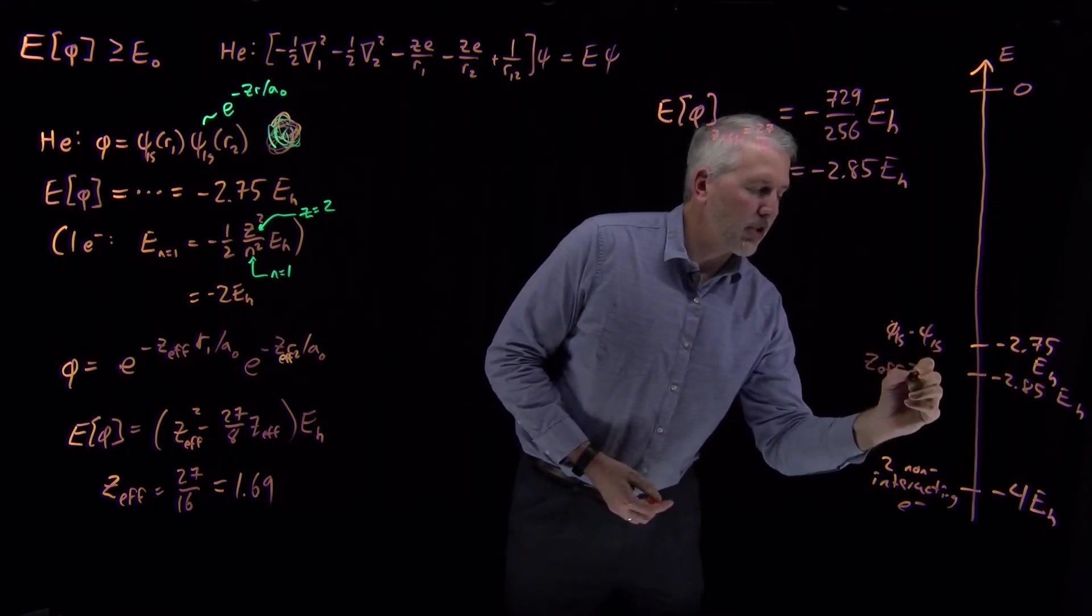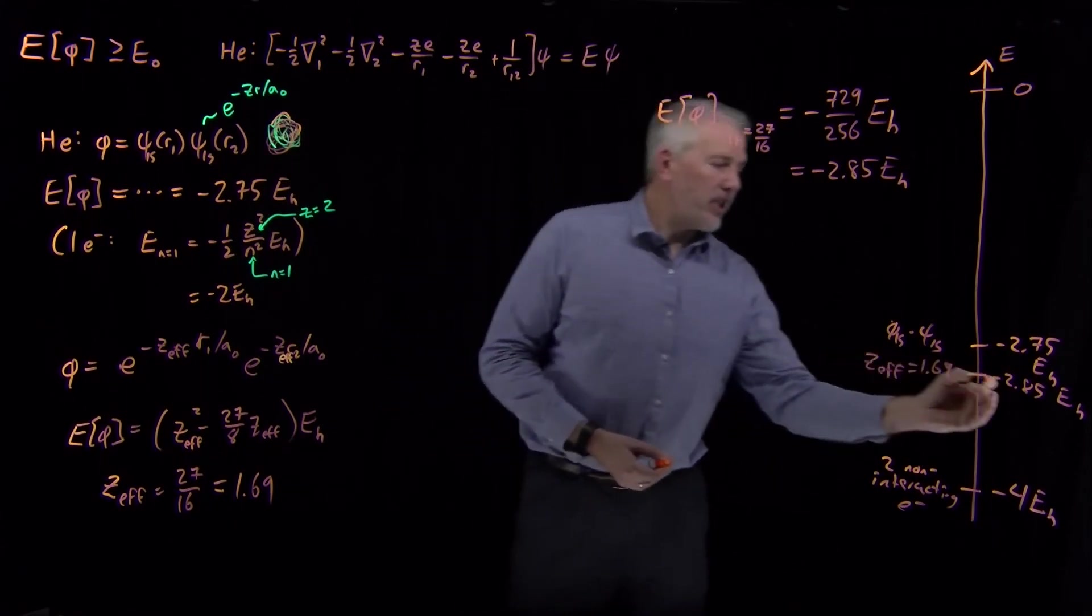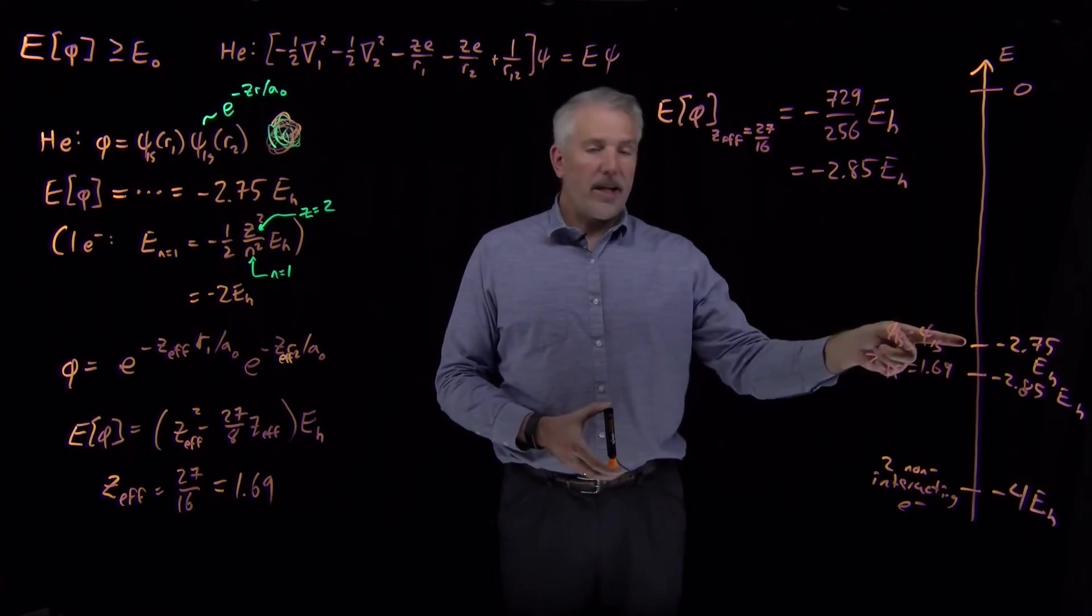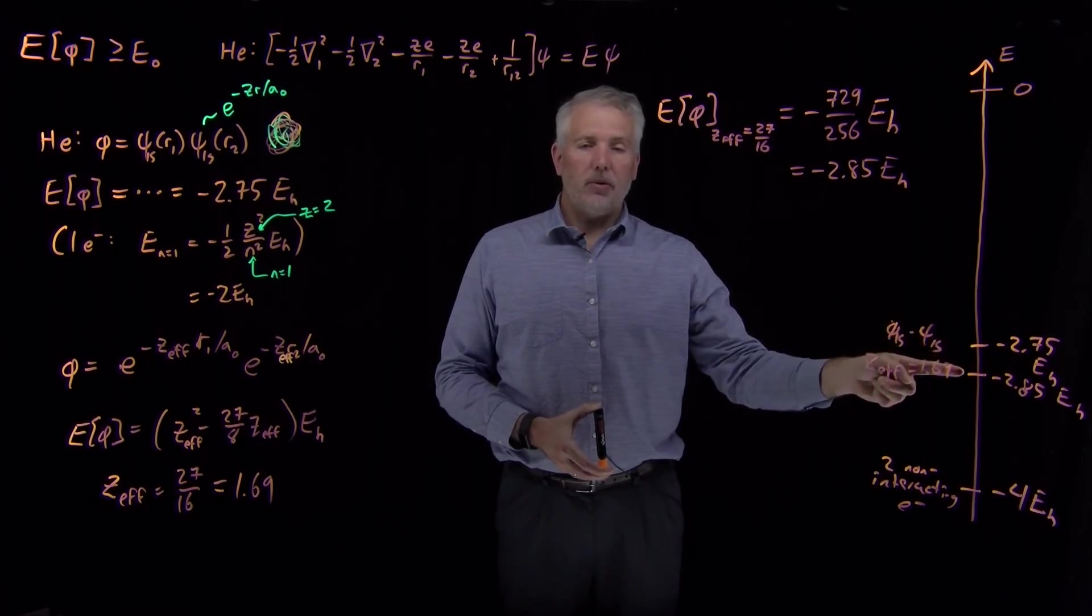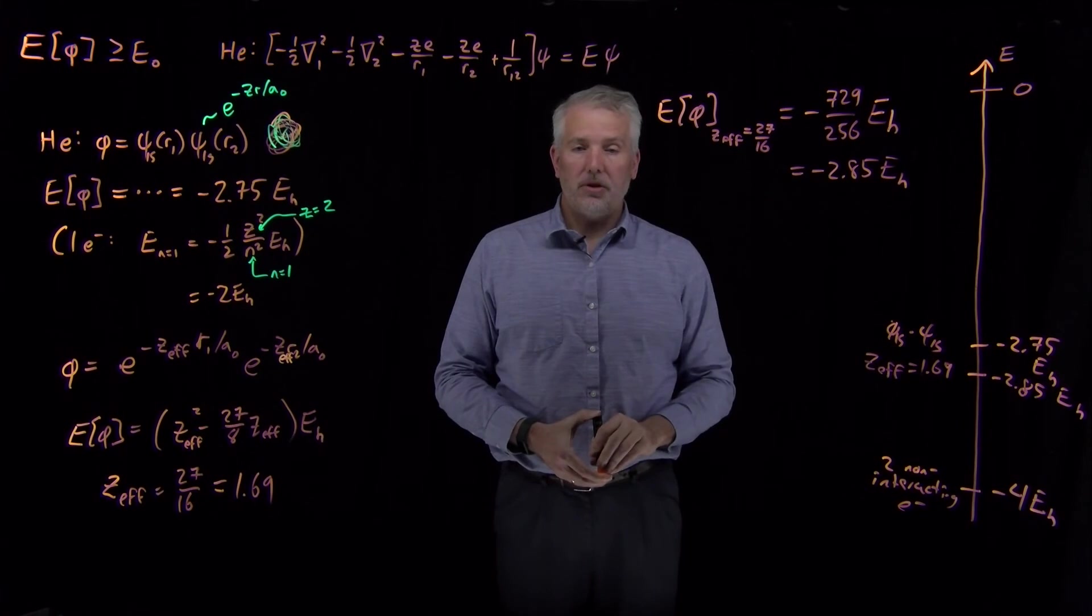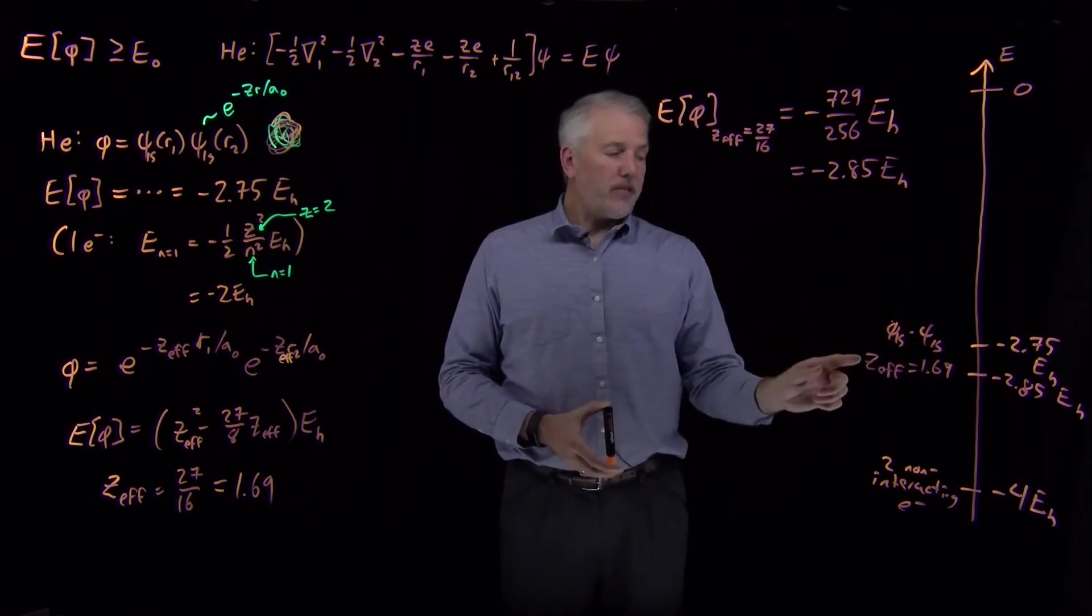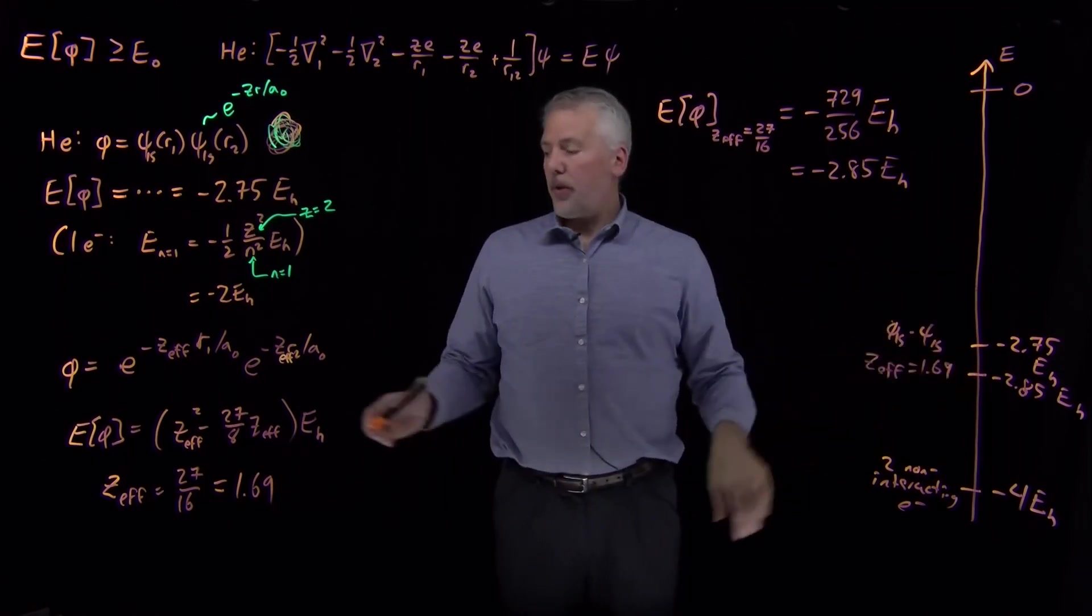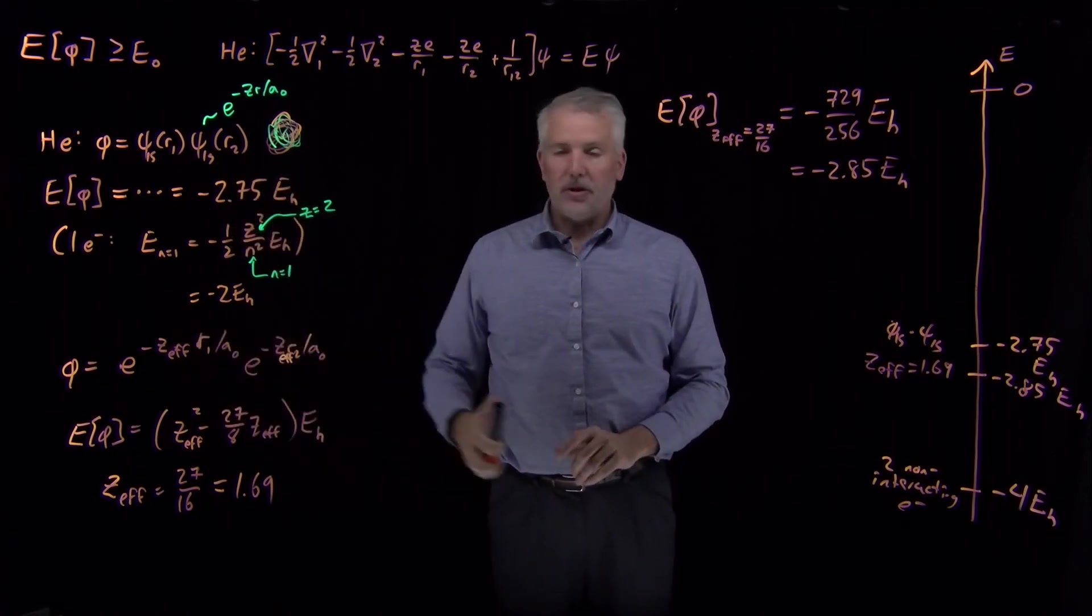So notice a couple of things about that result. When I use an effective nuclear charge that's the best value I can find, the energy has gone down. So if I insist on using the z equals 2 value, I get an energy of minus 2.75. If I allow the nuclear charge to be flexible and reduce it to its optimum value, I get an energy that's lower, 2.85 Hartrees. So we know that must be the case. I found the z effective that gave me the lowest possible energy. I can't get the energy any lower than this number with this form of the wave function, even if I allow the nuclear charge to change.